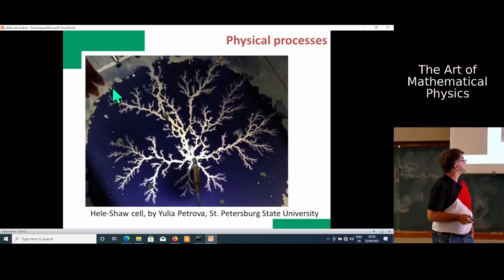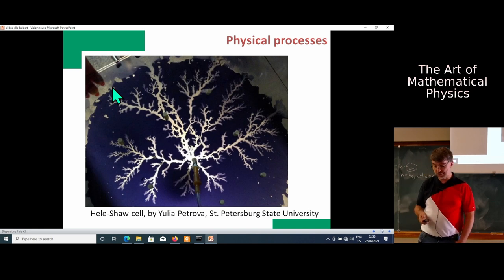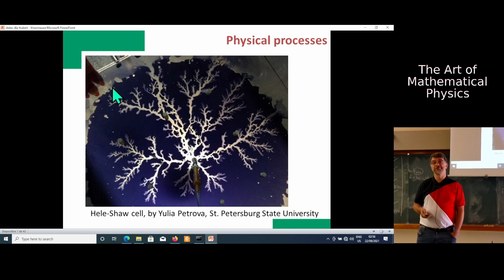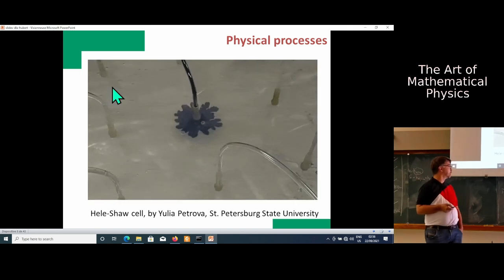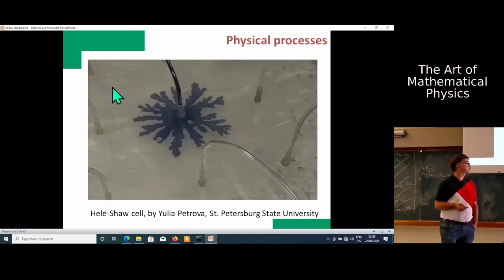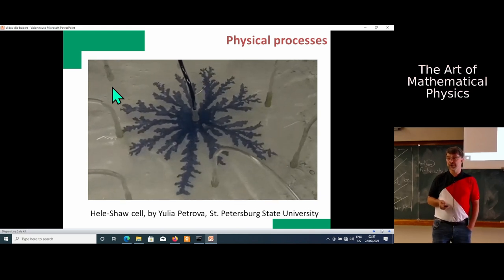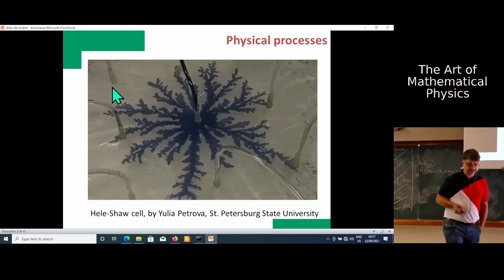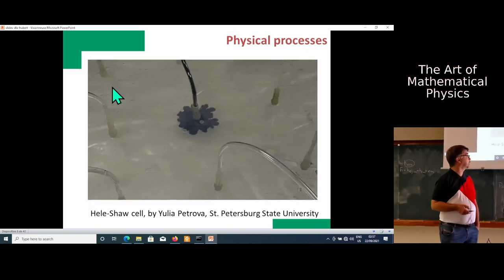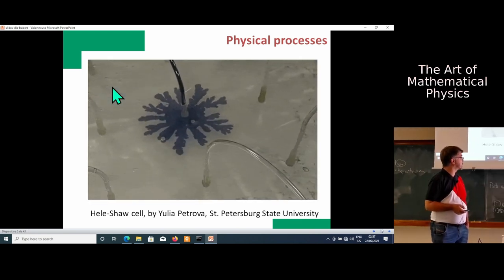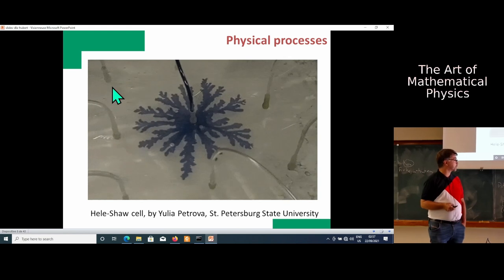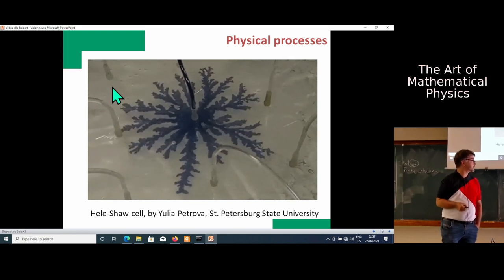This is an actual stone I have on my desk in my office. Stefan and I found it in the mountains. It's not some ancient plant squeezed between two sheets of rock, but rather manganese oxide flowing between two limestone sheets. Again, a very similar fractal shape. This is a Hele-Shaw cell.